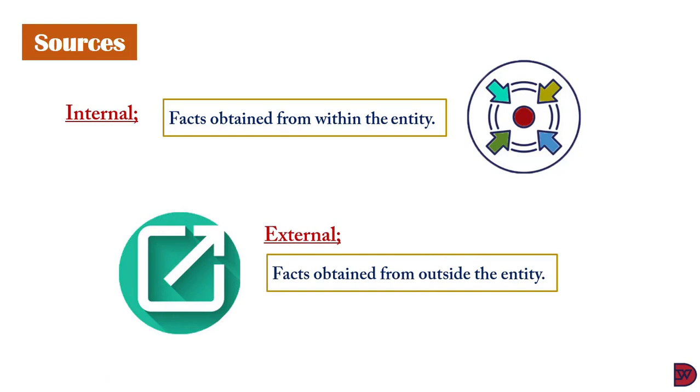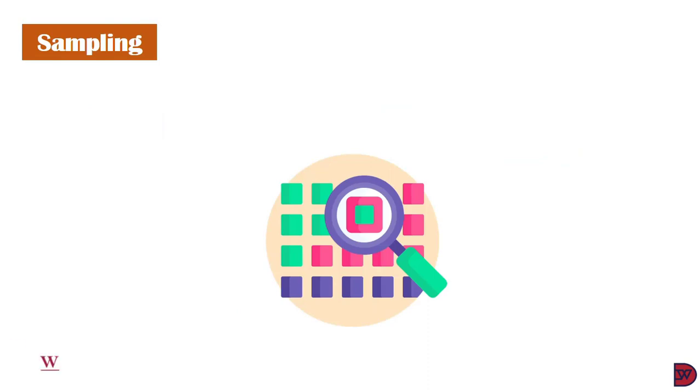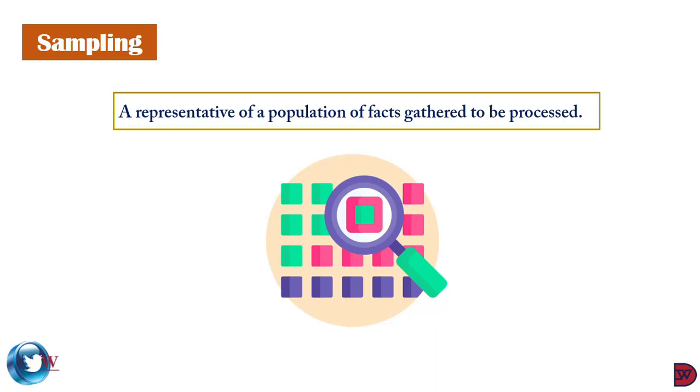The criteria for obtaining data lie within a vast number of interests. Due to certain constraints such as funding, time availability, and the nature of data needed, a representative of the large interest is settled on as the data. The method of selecting the few is known as sampling.